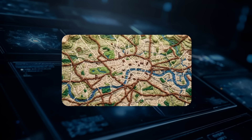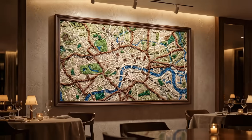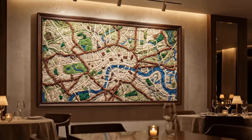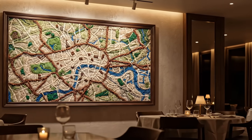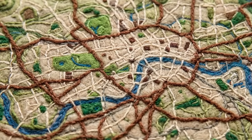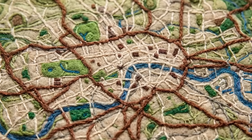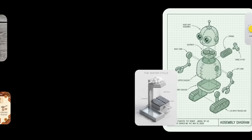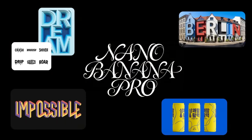When you ask it for a topographic map of London made out of embroidered felt, it gives you something you would actually see hanging in a restaurant, with recognizable structure instead of random shapes pretending to be geography. And yet it is not flawless — some distant skyline structures do not line up perfectly — but considering the entire thing is grounded in live search, this is a new level of realism for generative tools.